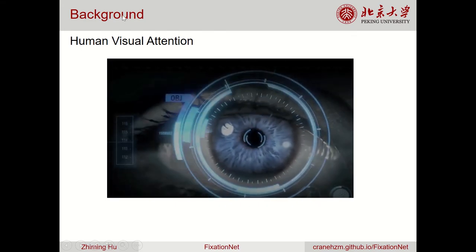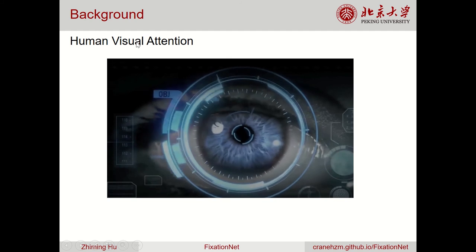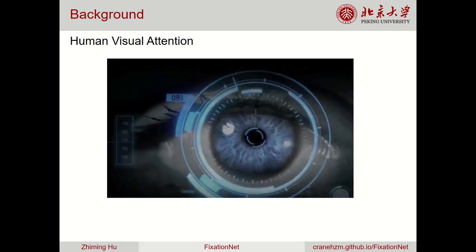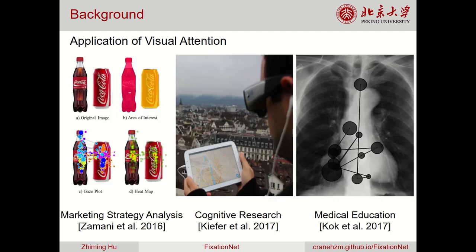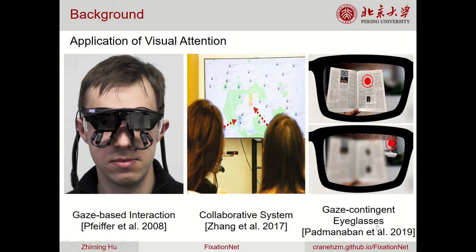Let's start with the background of this work. Human visual attention is a popular research topic in the area of vision research and is significant for many relevant areas. Human visual attention can be applied to marketing strategy analysis, cognitive research, medical education, gaze-based interaction, collaborative systems, as well as gaze-contingent eyeglasses.